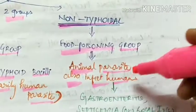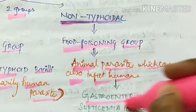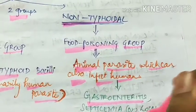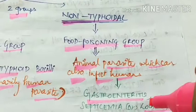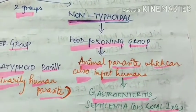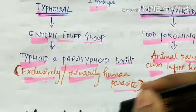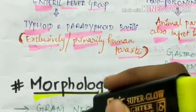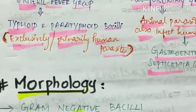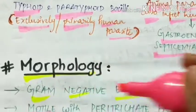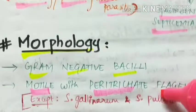Coming to the morphology of Salmonella, they are gram-negative bacilli. They are motile with the help of peritrichate flagella, that is flagella present all over the body.